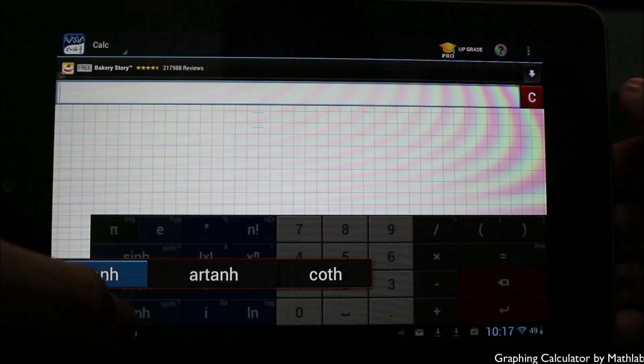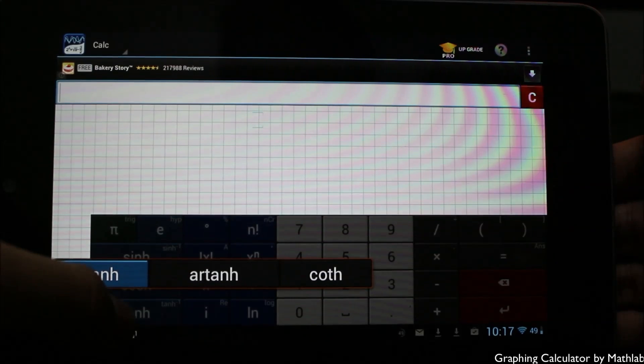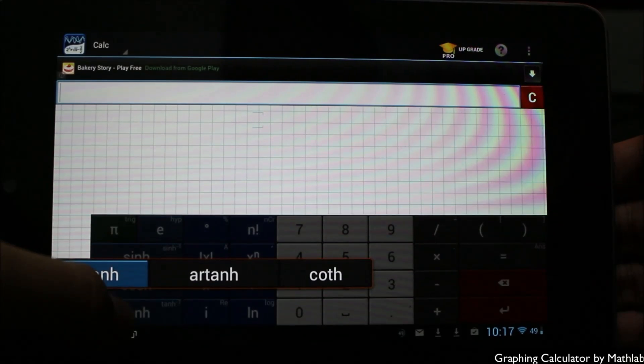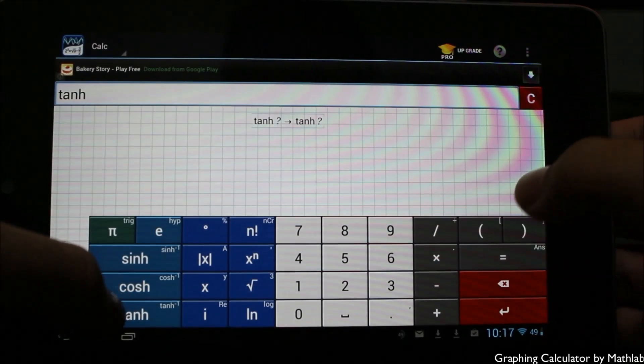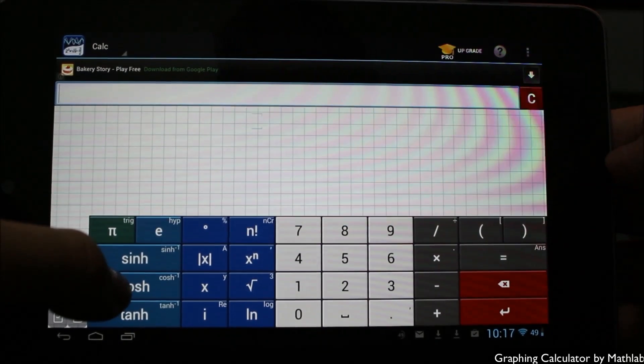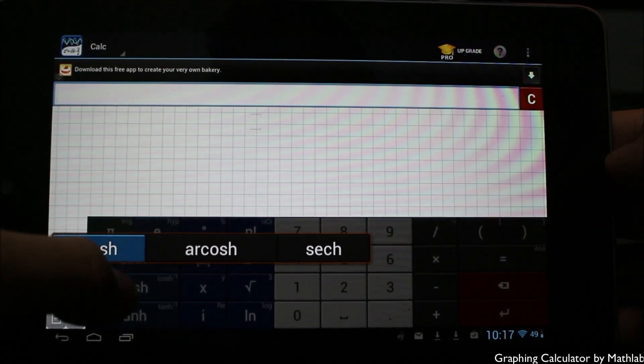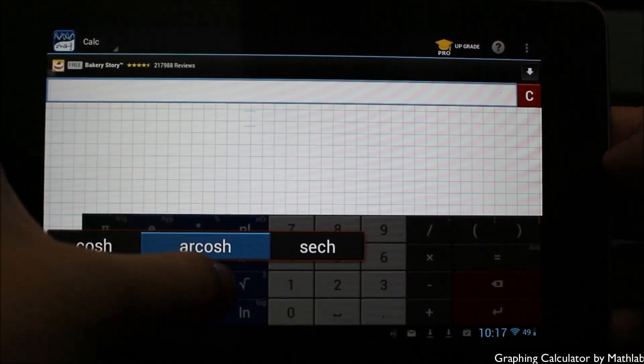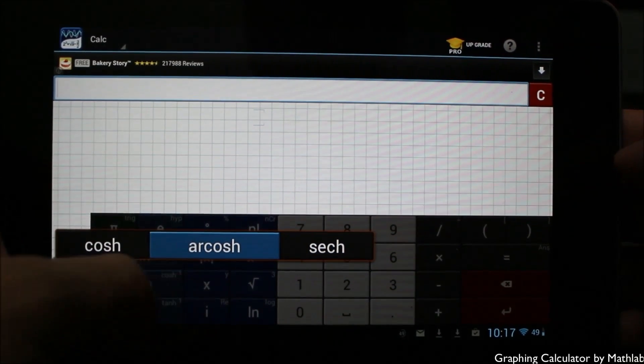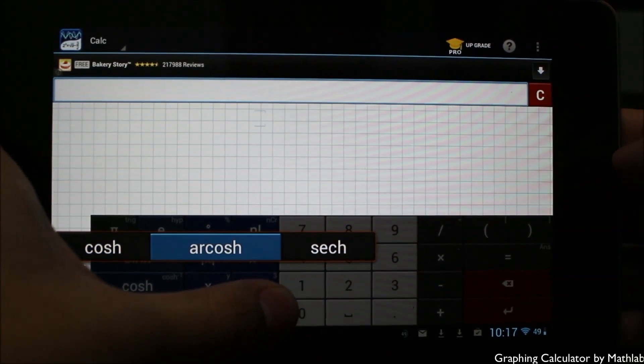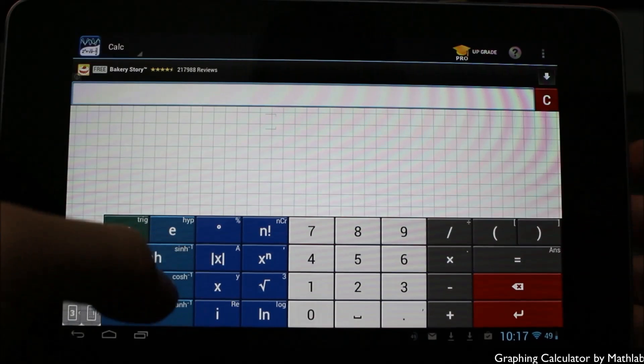The same thing would be for cosine or tangent. If I was to hold those, you can see I get arc tangent, cotangent also available just by holding down on that one button. A lot of these act as double buttons just by holding on to them. With cosine again, you hold on to it, you get the other options available, and you can simply swipe left or right for those functionalities within the application.